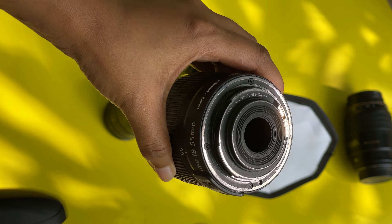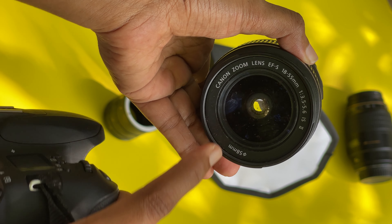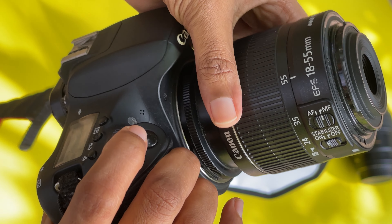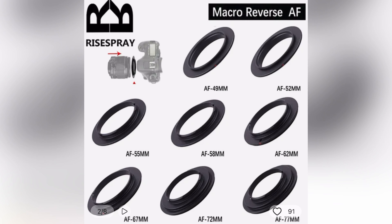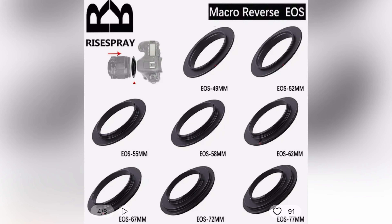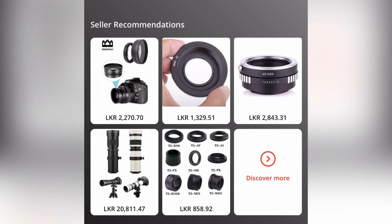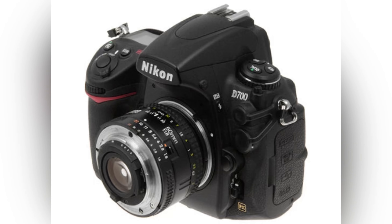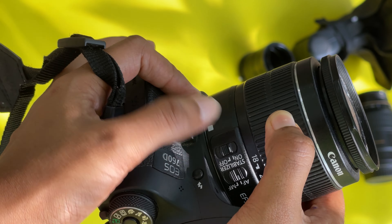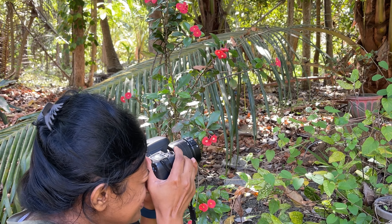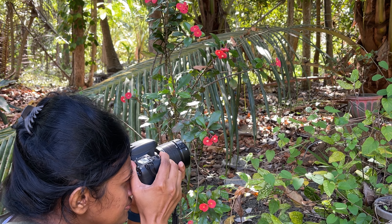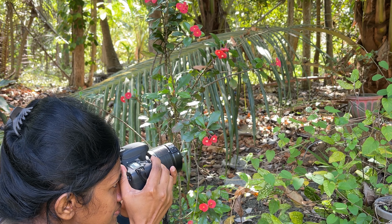It can also be converted to reverse macro. You can set the camera with the 18-55mm kit lens. In this case, you can use the macro reverse adapter ring. You can set the camera with the reverse adapter ring. You can use the macro photo and fix the adapter ring. You can focus using the lens.